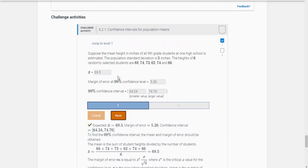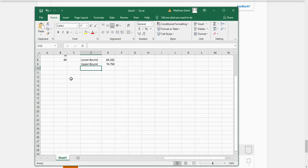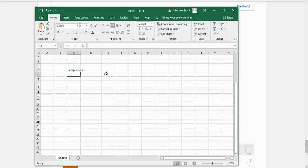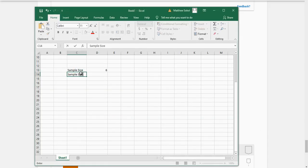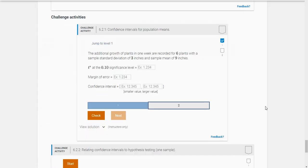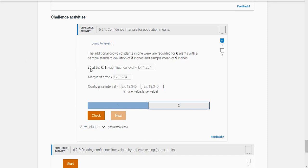The next one is very similar. The difference is we're going to use the t distribution. It says the additional growth of plants in one week are recorded for six plants, with the sample standard deviation of three inches and a mean of nine inches. This one you're not given the data, you're given the sample size. The sample size was six plants. You were given the sample standard deviation, that was three, and the sample mean of nine inches.